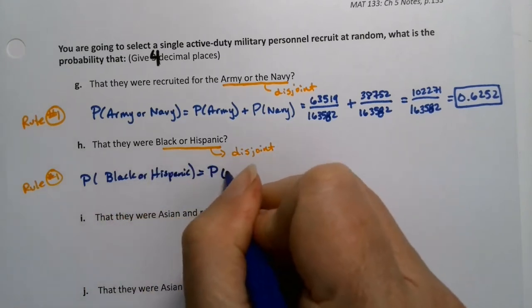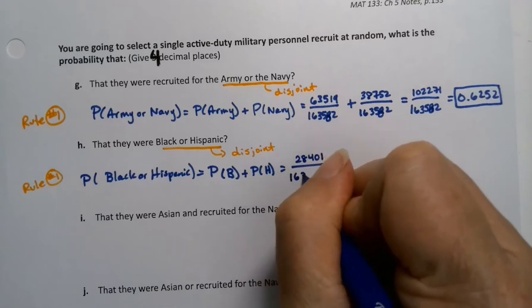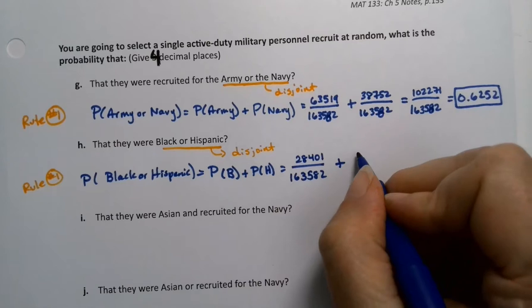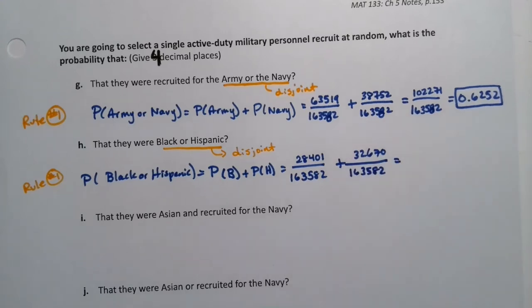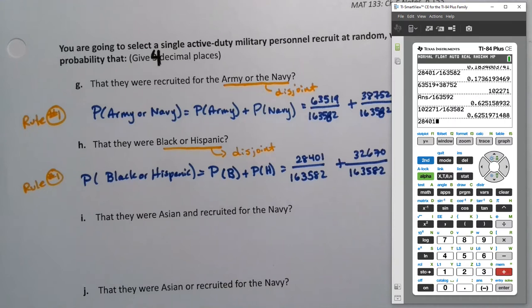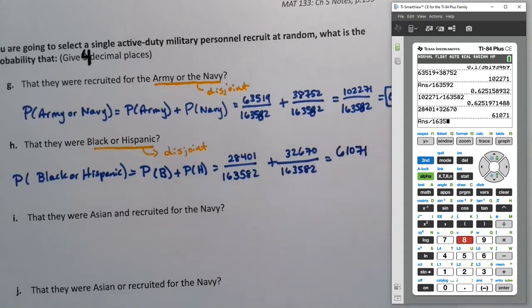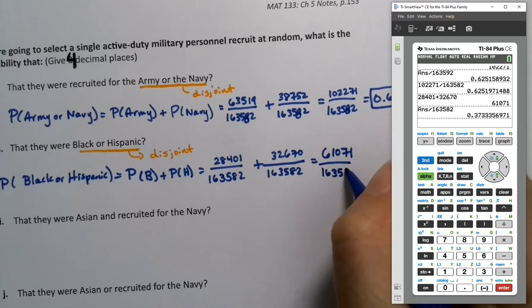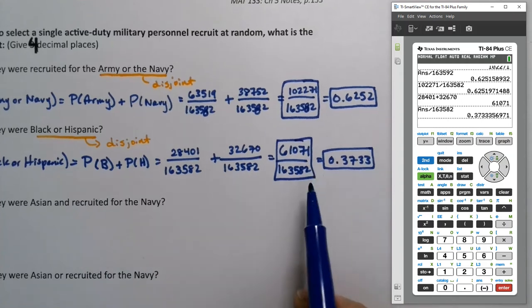So I'm going to take the probability of black or Hispanic. And to save myself some space, I'm going to abbreviate here to B plus the probability of H, which is now for black, it was 28,401. Plus, and then Hispanic was 32,670. And so I need to add those two numerators together, again, with a calculator. So 28,401 plus 32,670. And we get 61,071. If we divide that by 163,582, we get 0.3733. Now keep in mind, these fractions right here are also valid probabilities, but it asked for it in four decimal places. So therefore, it's the decimal ones that we're looking for on this particular problem. But technically, the fractions are also just as valid.